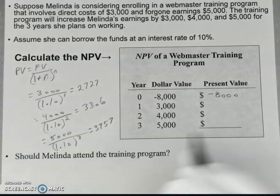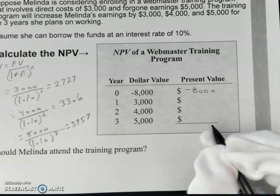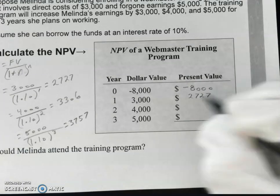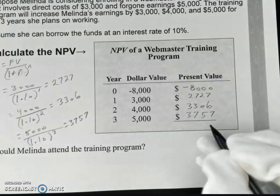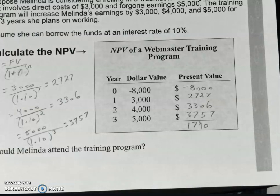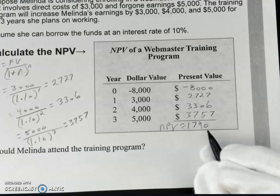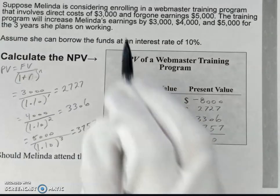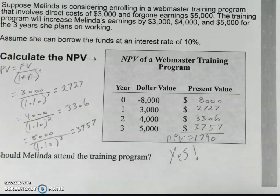Now, we used this formula to get the present value for each of these years, so in order to get the net present value, we need to add all of these up: negative $8,000, positive 2,727, positive 3,306, and positive 3,757. You add all these up and you should get approximately 1,790. So the last question is — if 1,790 is the net present value, should Melinda embark on this webmaster training program? And the answer is a big yes, because she has a positive net present value, which means it's an efficient investment.